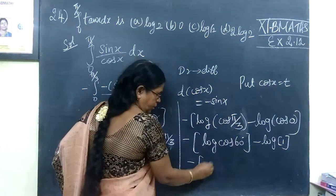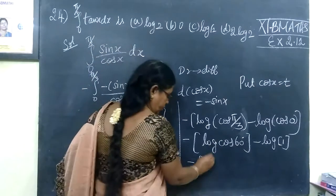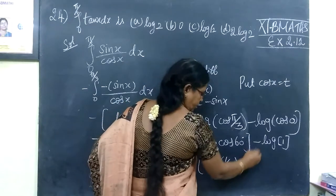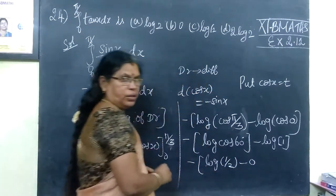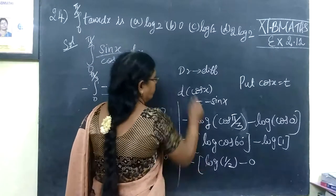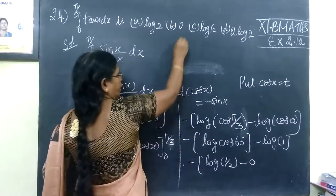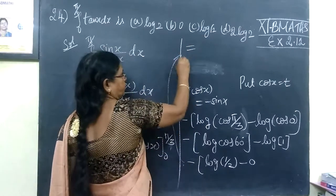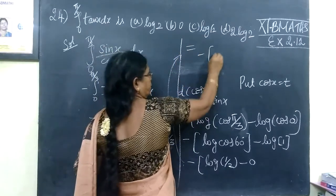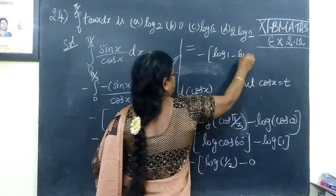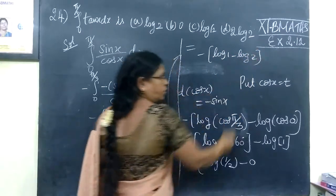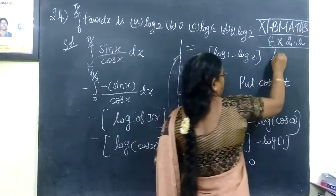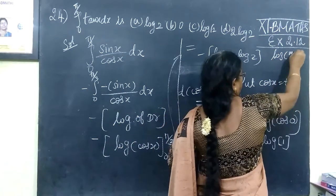So log of 1/2 minus log 1. What is log 1? Log 1 is 0. So we get log of 1/2, which equals log 1 minus log 2, because log M by N equals log M minus log N.